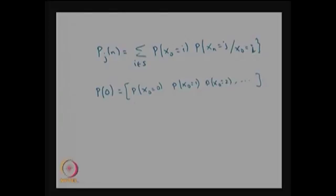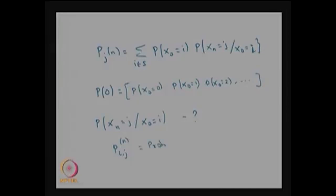What we need is the n-step transition probability: the probability the system will be in state j given it was in state i at step 0. This is the conditional probability mass function — the n-step transition probability p(i,j) superscript n. This can be computed using the method called Chapman-Kolmogorov equations, which provide a method for computing n-step transition probabilities.